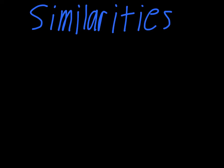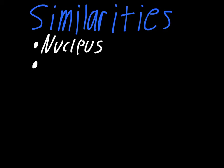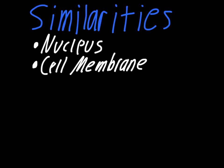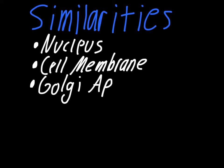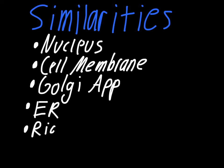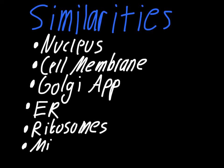Now for some of the similarities: they both have the nucleus, they both have the cell membrane, they both have the Golgi apparatus, they both have the ER in both varieties, ribosomes, and another big one — the mitochondria. So they have much more in common than they have that's different.